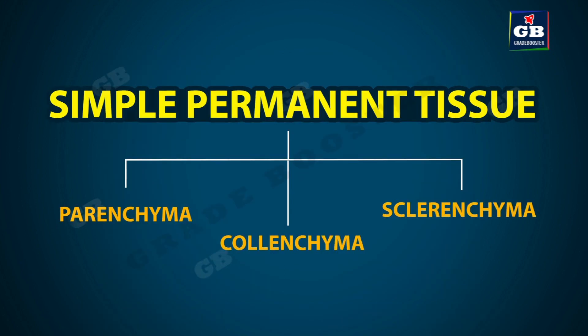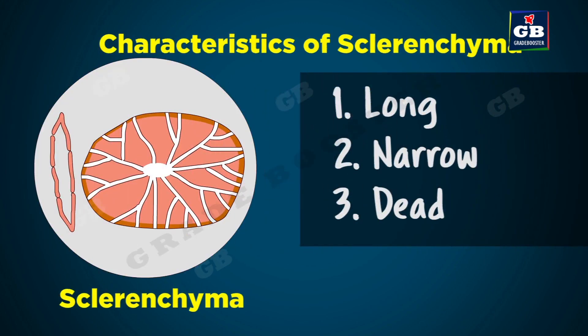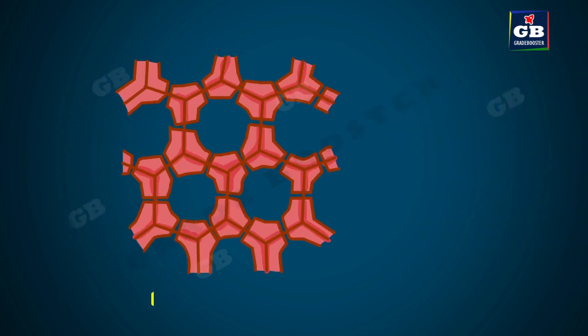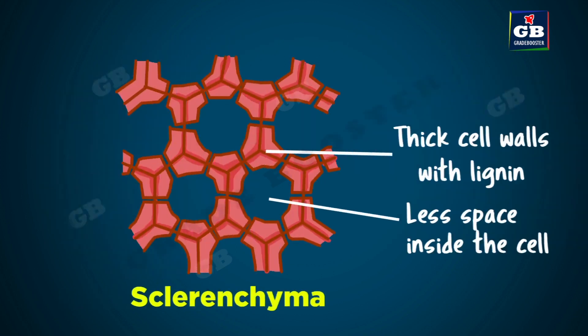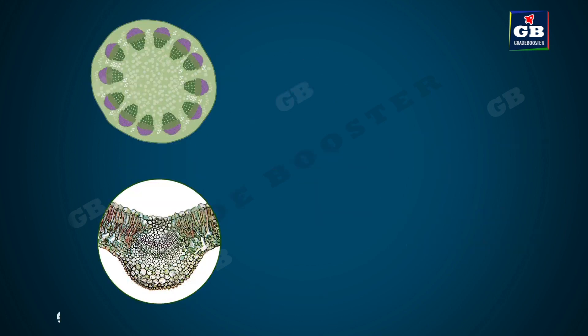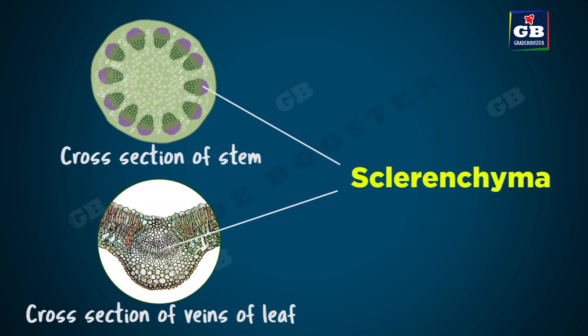The third type of simple permanent tissue is sclerenchyma. The cells of sclerenchyma are long, narrow, and dead. The cell walls are thickened due to the presence of a compound called lignin. Due to thick cell walls, there is very little or no space inside the cells. This tissue is located around the vascular bundles in the stems and in the veins of leaves.